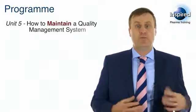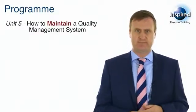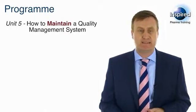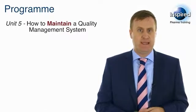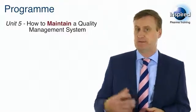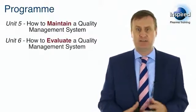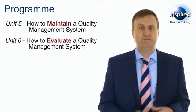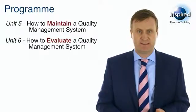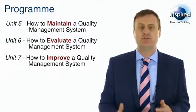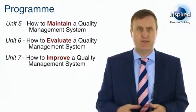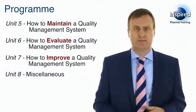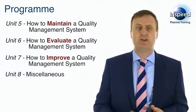In Unit 5, we will cover how to maintain a quality management system, explaining how essential tasks and activities are performed to keep the QMS effectively working. It is no good having a system if you are not prepared to see how it is working. And so, in Unit 6, we will cover how to evaluate a quality management system. In Unit 7, we will cover how to improve a quality management system. Then there is a short Unit 8, entitled Miscellaneous, which contains some additional course materials, such as typical QP Viva questions and situations.